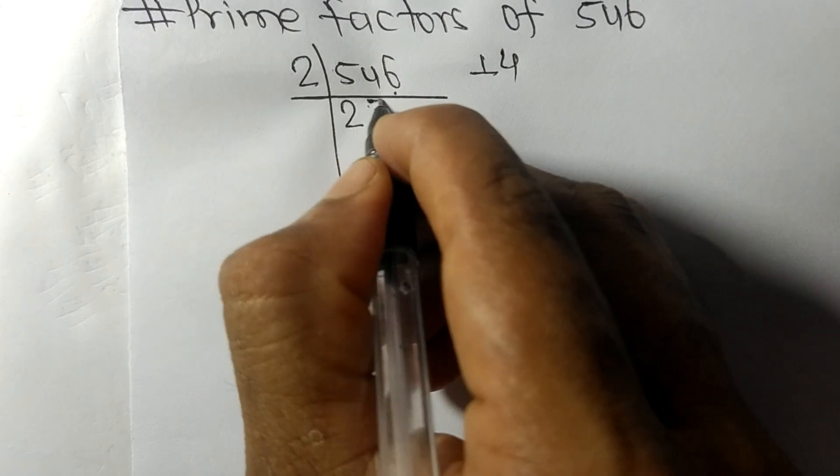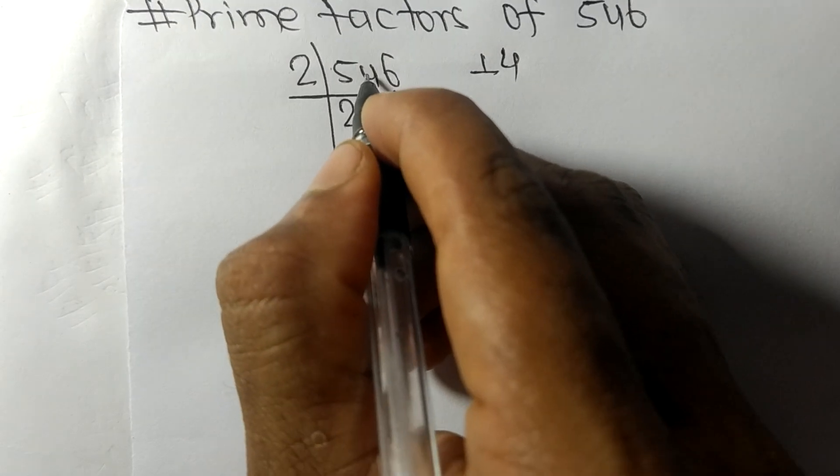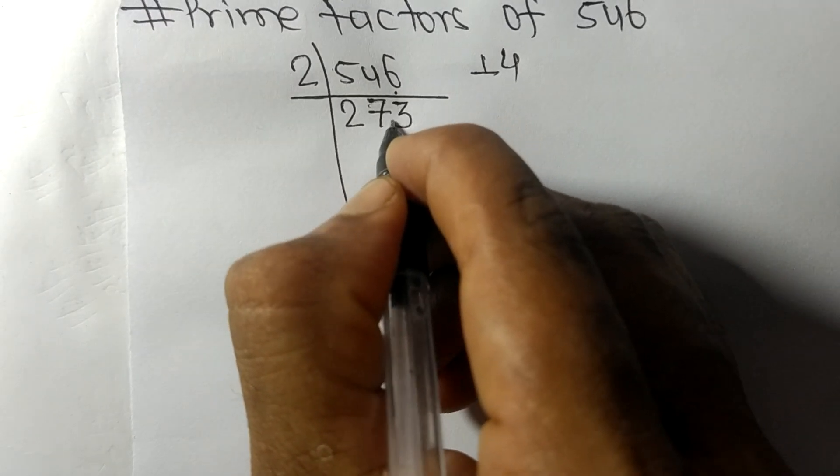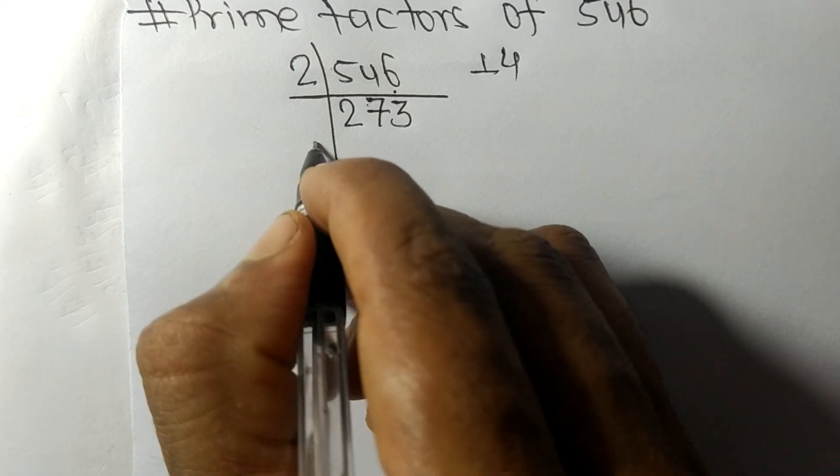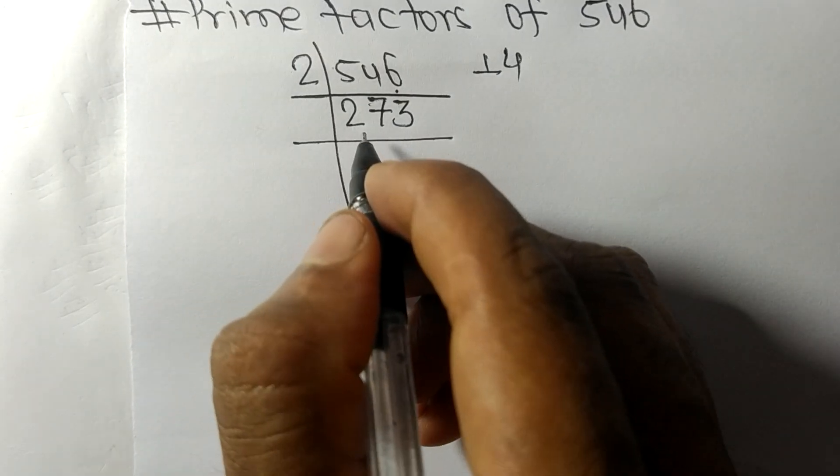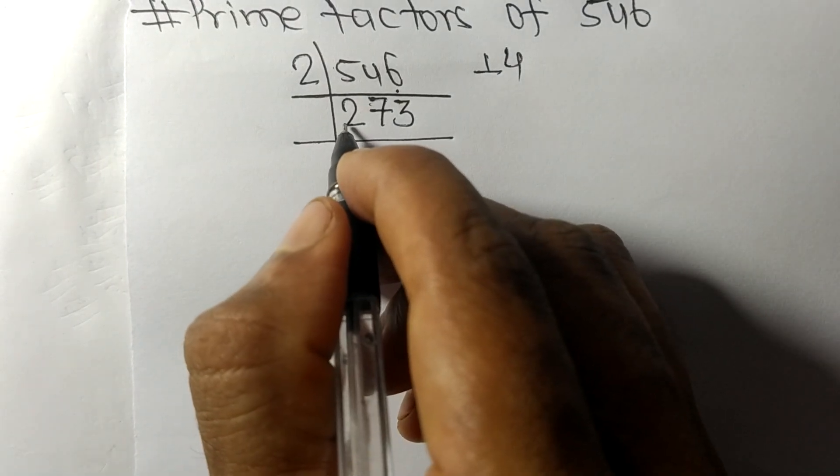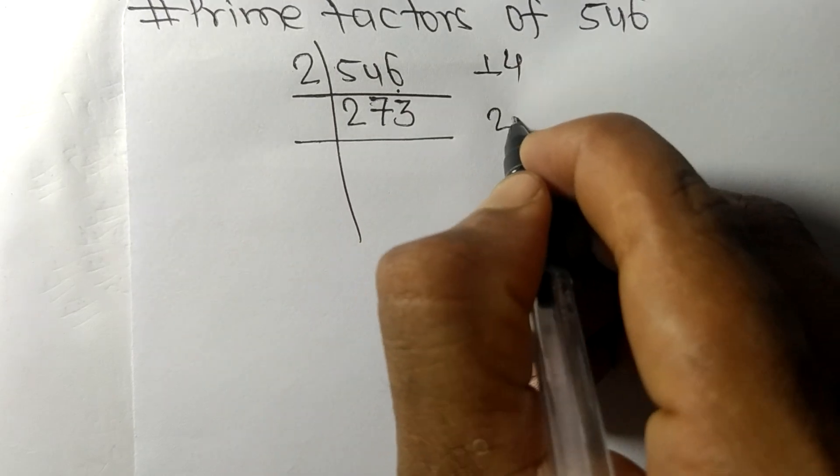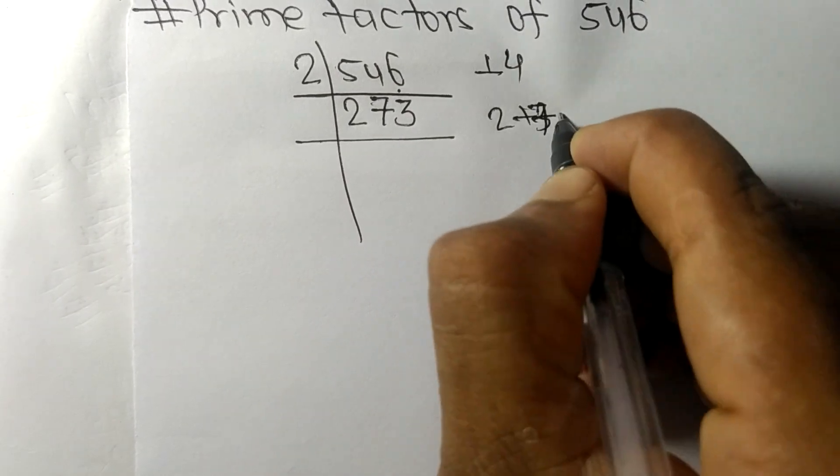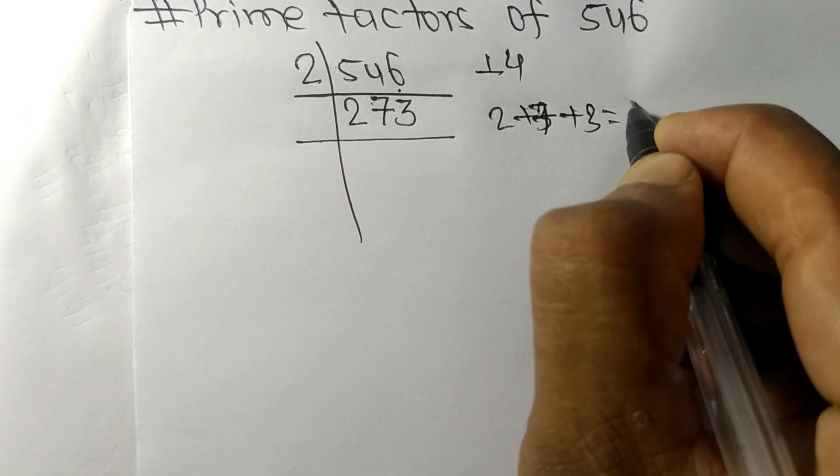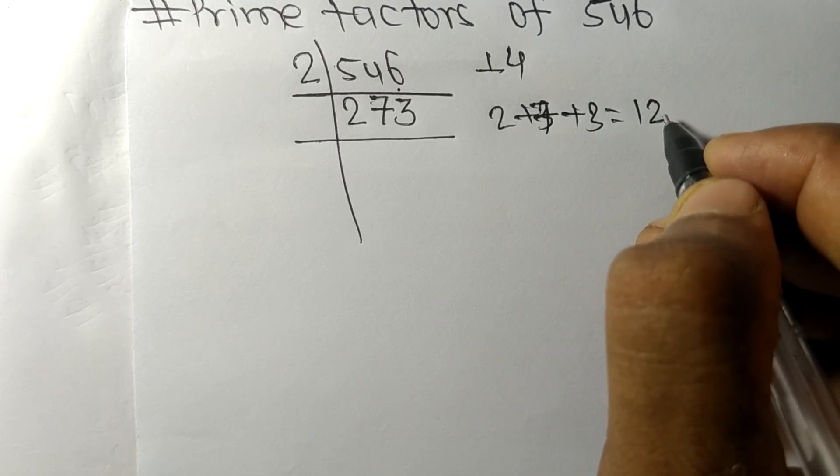2 times 7 equals 14, and 2 times 3 equals 6. Now we have 273. When we add all these digits—2 plus 7 plus 3—we get 12, and 12 is exactly divisible by 3.